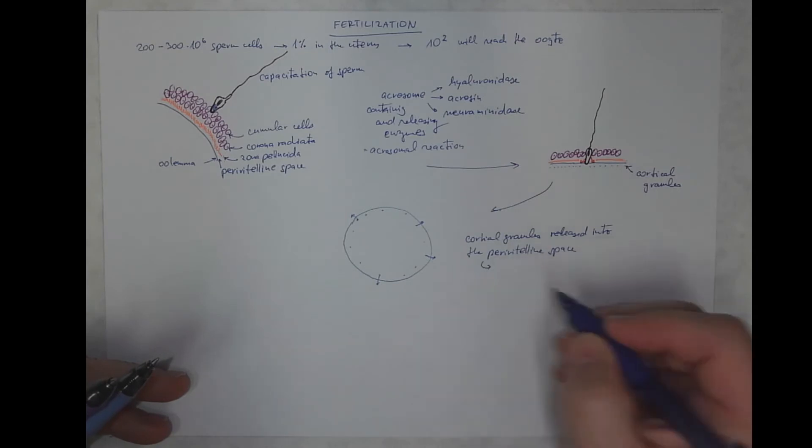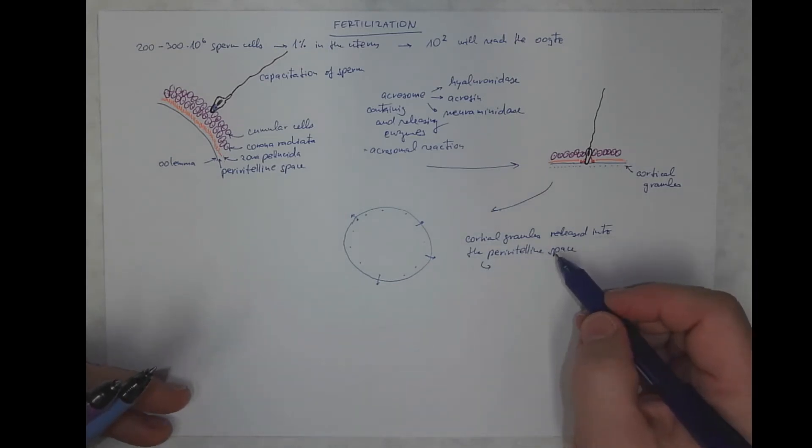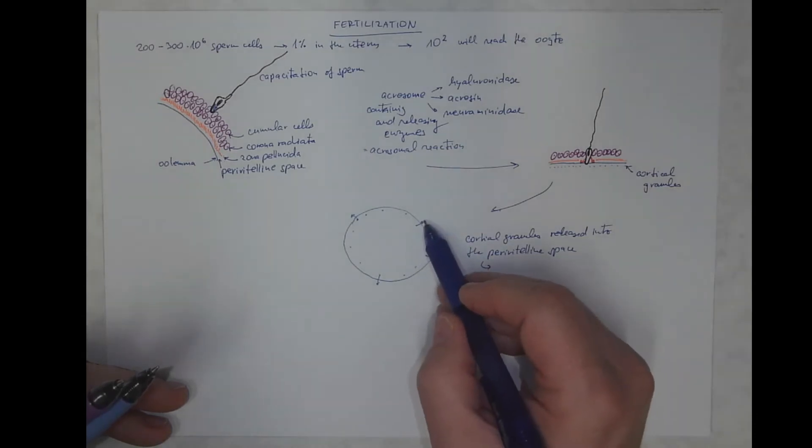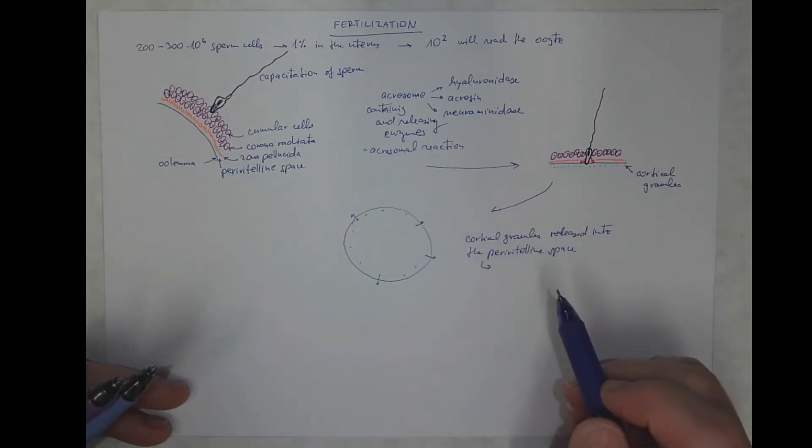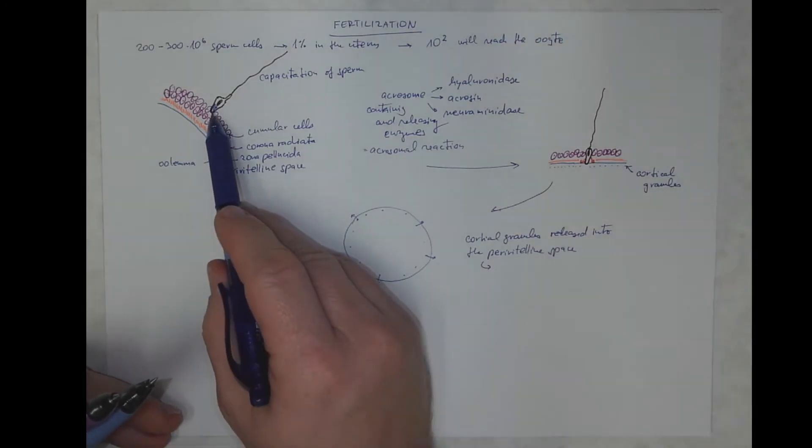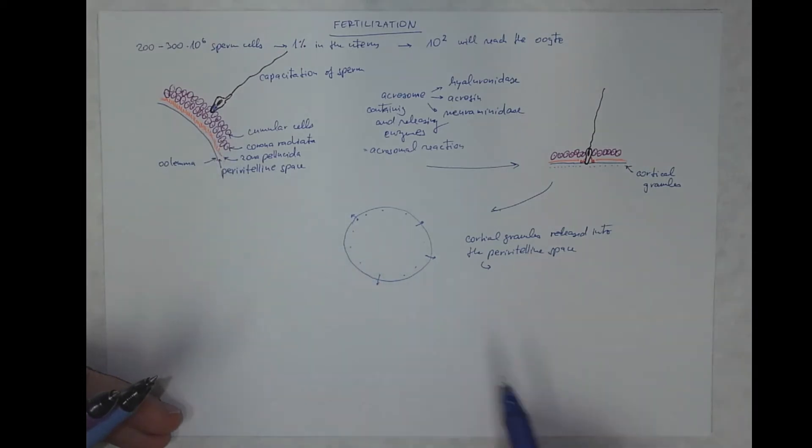As a consequence, this makes for other sperm cells impossible to enter the same oocyte, because the sperm cells will not be able to adhere to the oocyte.